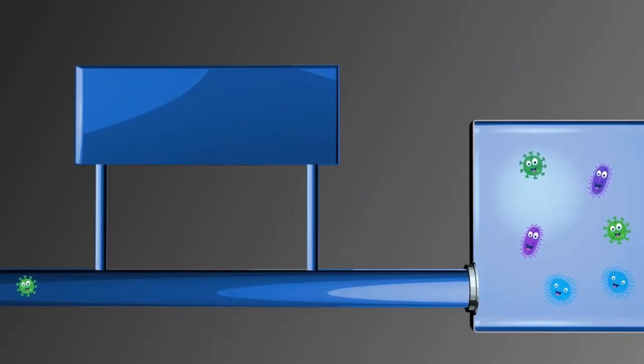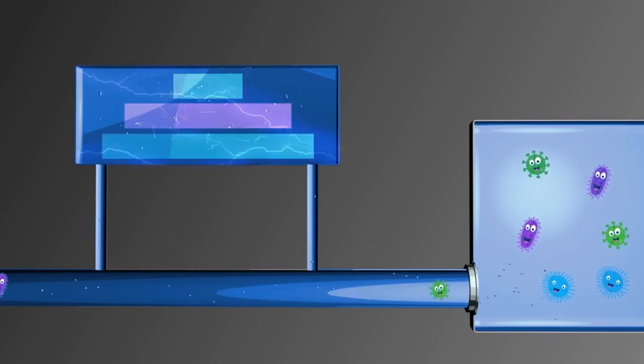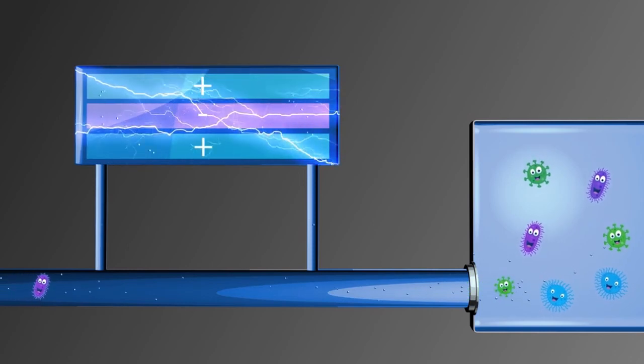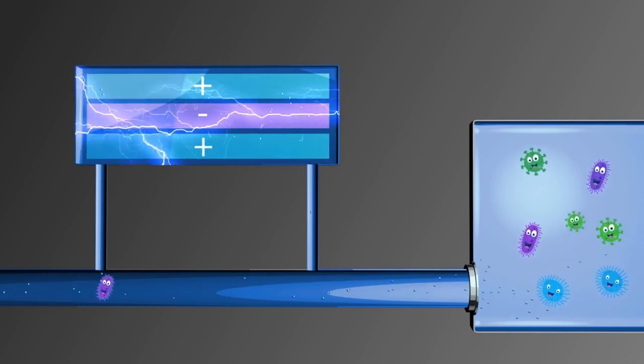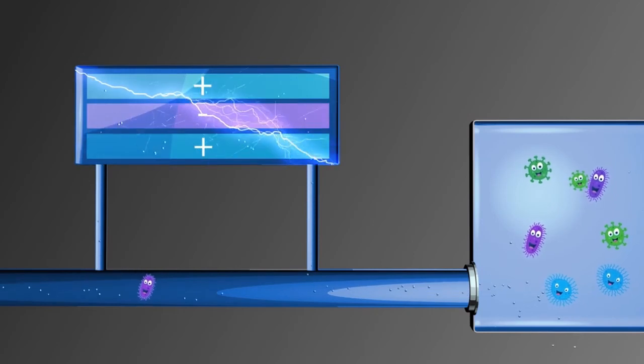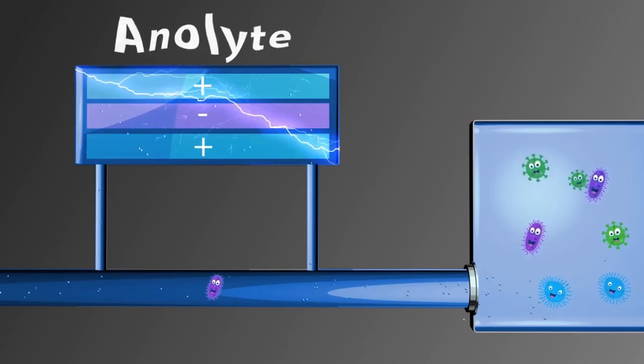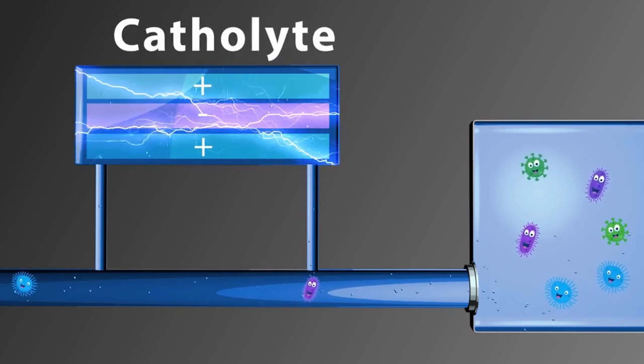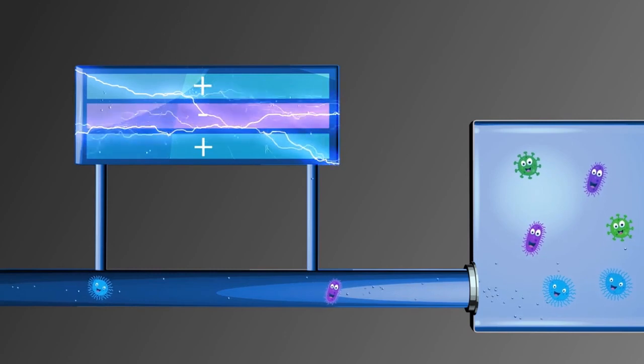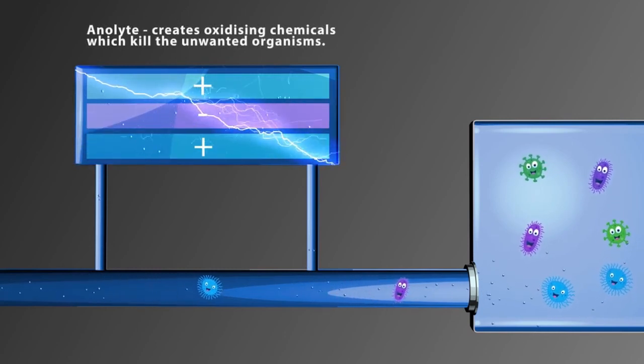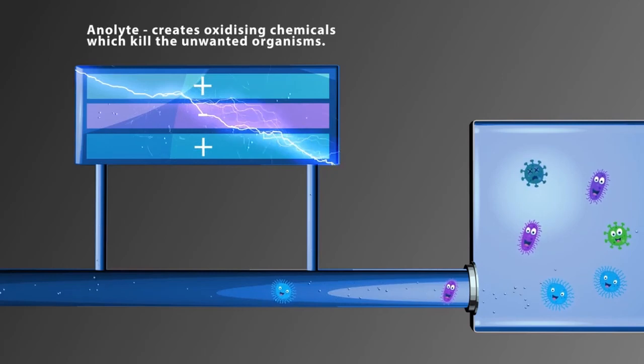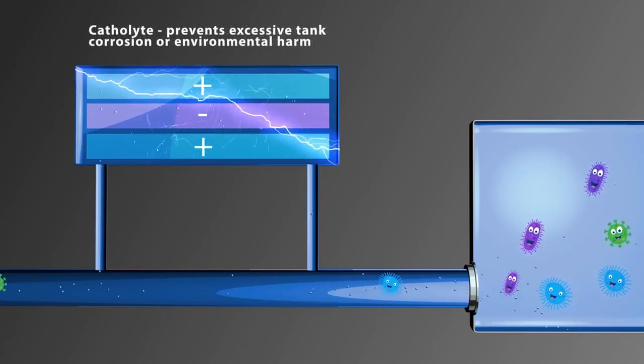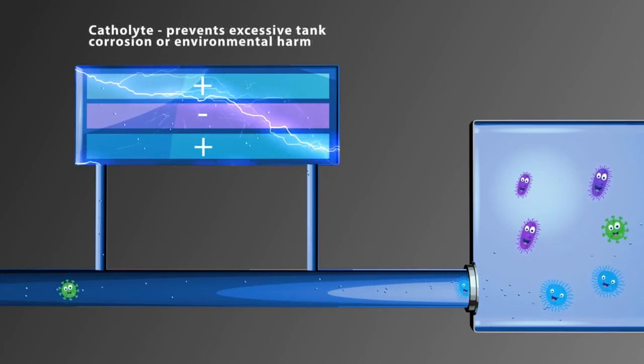In an electrolysis system, an oxidizing disinfectant can be produced in a process known as water activation. An electric current is applied to water in an electrolysis chamber. The water is broken down into an acidic biocide known as anolyte and an alkaline substance known as catholyte. The anolyte is injected into the ballast water where it creates oxidizing chemicals which kill the unwanted organisms. The catholyte can be used to neutralize the pH change later, preventing excessive tank corrosion or environmental harm.